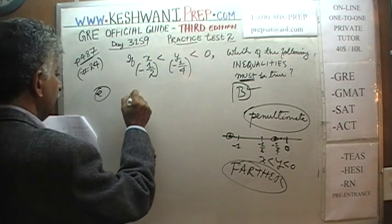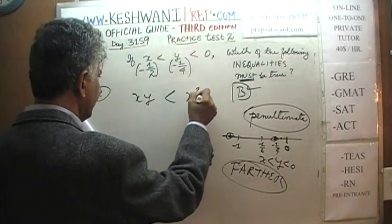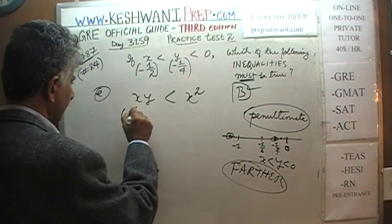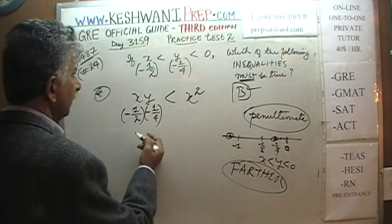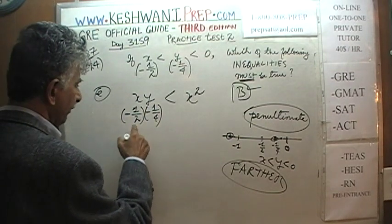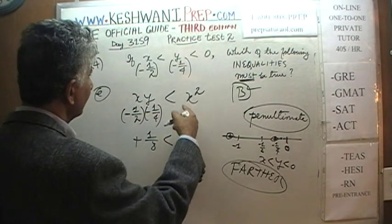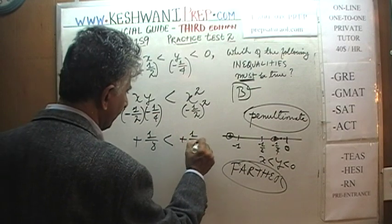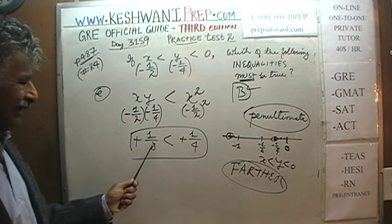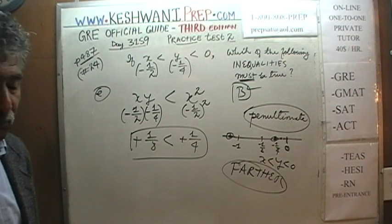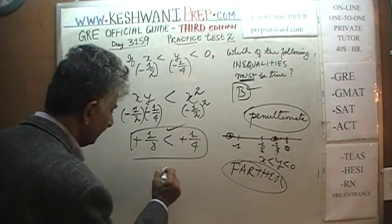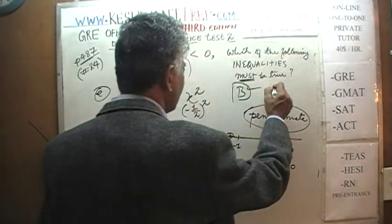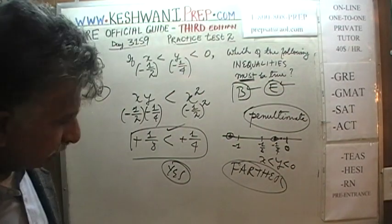E says xy < x². With x = -1/2 and y = -1/4: xy = -1/2 times -1/4 = positive 1/8. And x² = (-1/2)² = positive 1/4. Is 1/8 less than 1/4? Yes, it is true. E works — which means we have to go to a second round with B and E both still in contention.